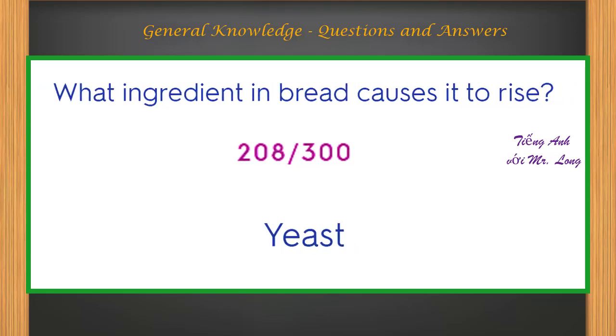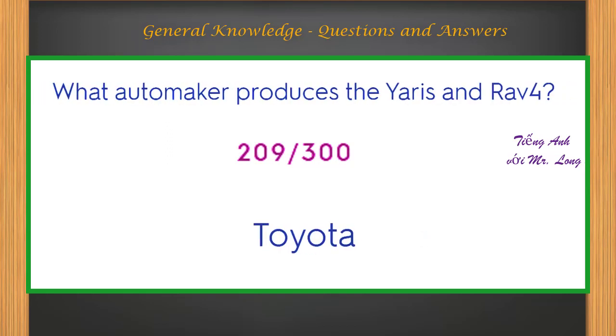What ingredient in bread causes it to rise? Yeast. What automaker produces the Yaris and RAV4? Toyota.